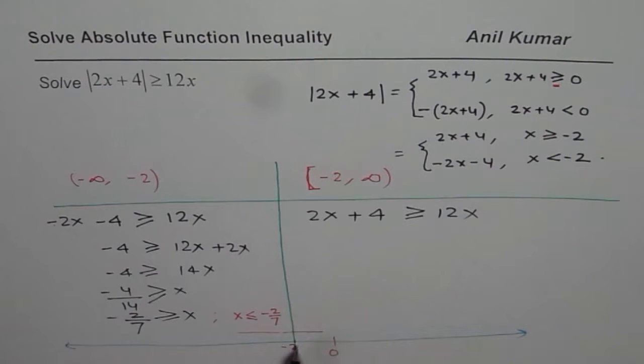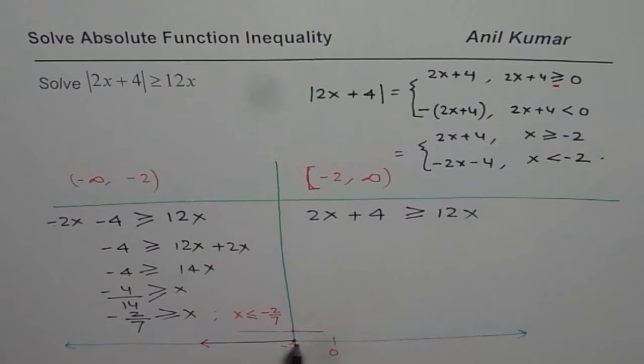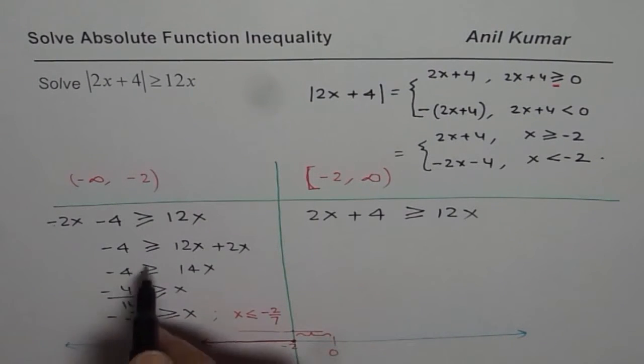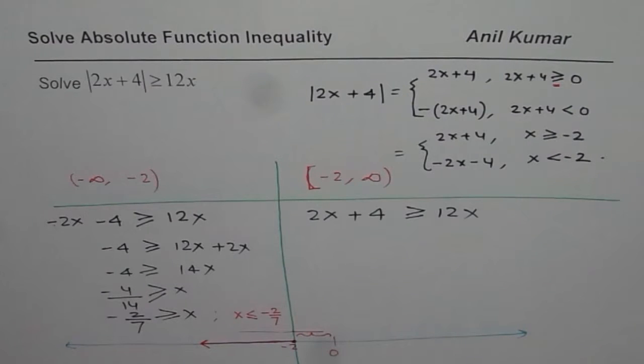Since we are only considering interval from minus infinity to minus 2, we will actually include from minus 2 only towards the left side. So we cannot include this portion, I hope you understand, since it is not in our interval. So this is the portion which we get from solving inequality on the left side of minus 2.